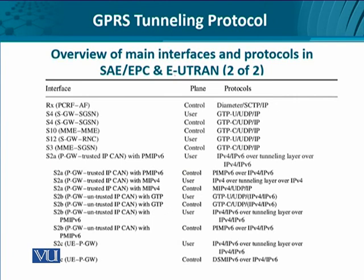The other alternative, Proxy Mobile IP version 6, also has interesting deployments and application scenarios such as S2A, where the packet gateway has an interface with the trusted IP connectivity access network. It is implemented as both the control plane and the user plane. In the control plane, we see Proxy Mobile IP version 6 over IP version 4 and IP version 6.